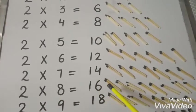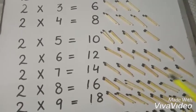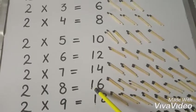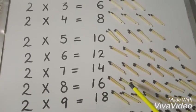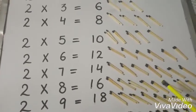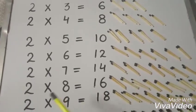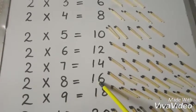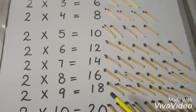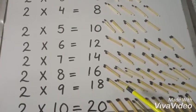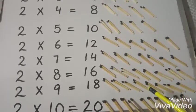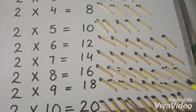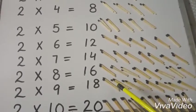When you take two eight times, it will become sixteen. You can count all of these and you will get two eights are sixteen. Again, when you take two nine times, it will be a total of eighteen.